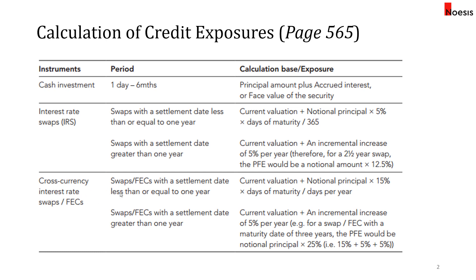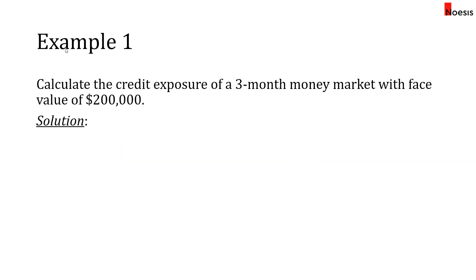For cross-currency interest rate swaps or FECs with less than one year to settlement, take the current valuation plus the notional principal. In the first year, use fifteen percent times days of maturity over days per year, then add five percent per year for every subsequent year. For example, a three-year swap or FEC: fifteen percent in year one, plus five percent in year two, plus five percent in year three, totaling twenty-five percent for the exposure calculation.